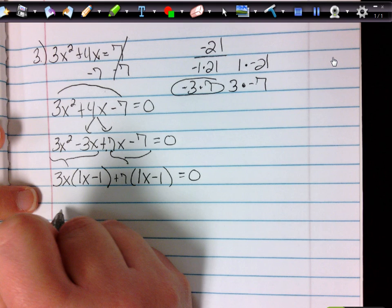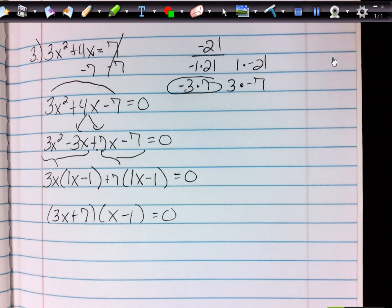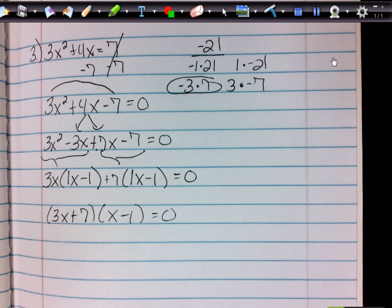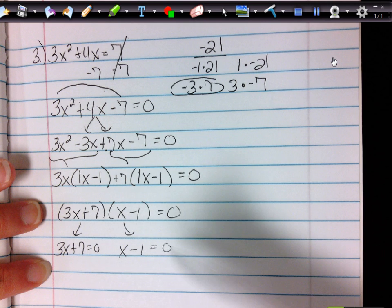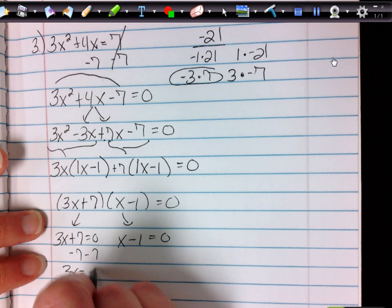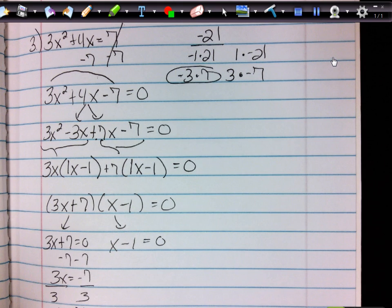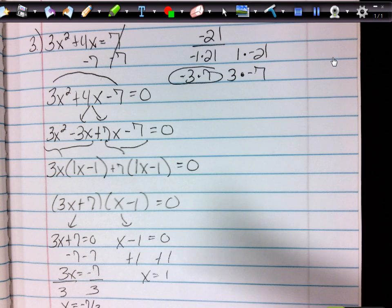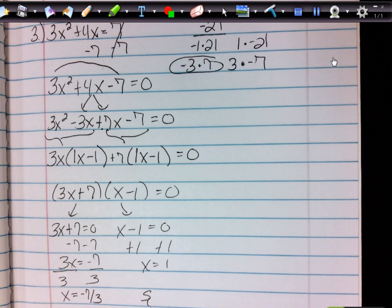So I have two factors: 3x plus 7 and x minus 1. I can't stop here because I'm solving by factoring, so I set each factor equal to zero: 3x plus 7 equals zero, and x minus 1 equals zero. Subtracting 7 and dividing by 3 gives x equals negative 7 over 3. Adding 1 to both sides gives x equals 1. In set notation: {-7/3, 1}.